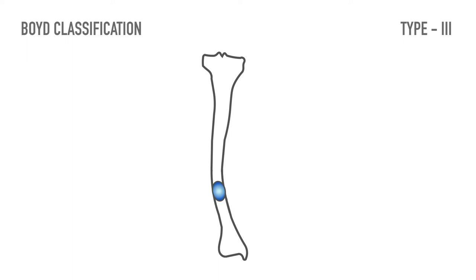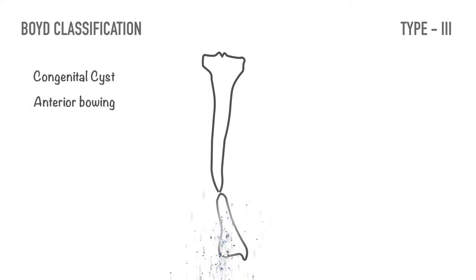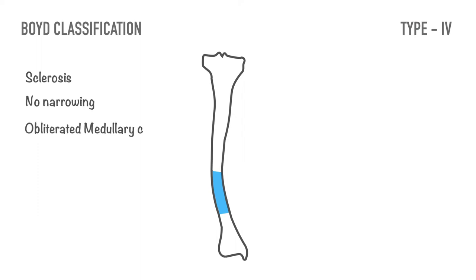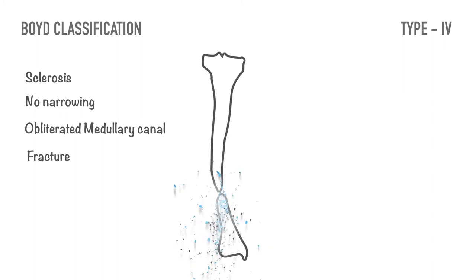In type 3, pseudoarthrosis develops in a congenital cyst, usually near the junction of the middle and distal thirds of the tibia. Anterior bowing may precede or follow the development of a fracture. In type 4, pseudoarthrosis originates in a sclerotic segment of the bone in the classic location without narrowing of the tibia. The medullary canal is partially or completely obliterated and an insufficiency or stress fracture develops in the cortex of the tibia, gradually extending through the sclerotic bone, leading to formation of a pseudoarthrosis.